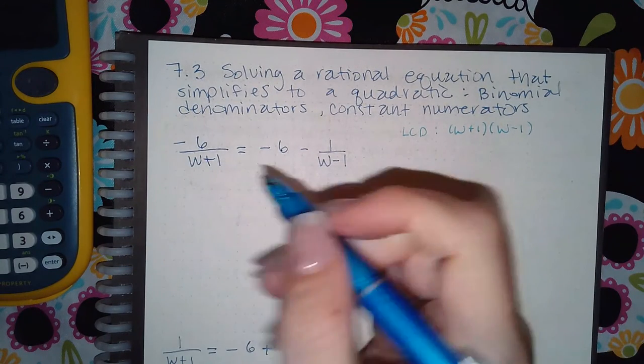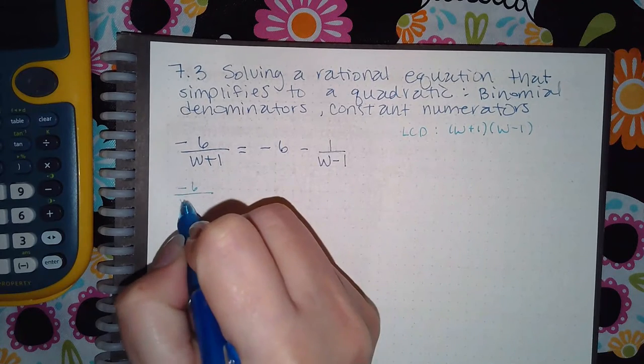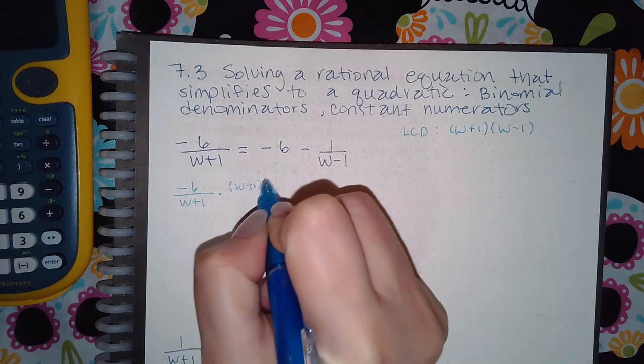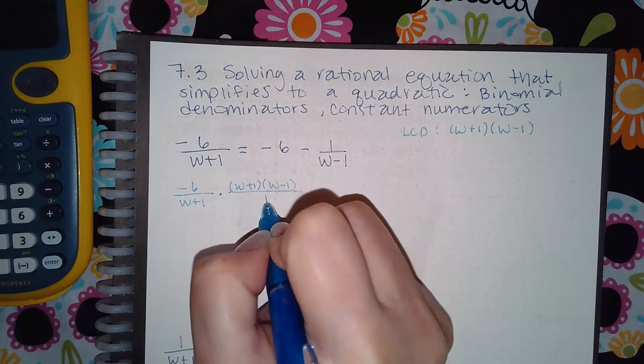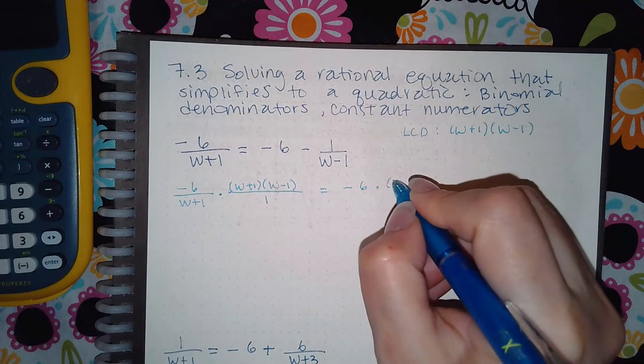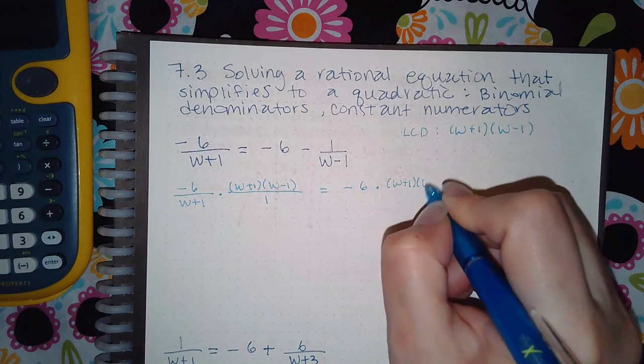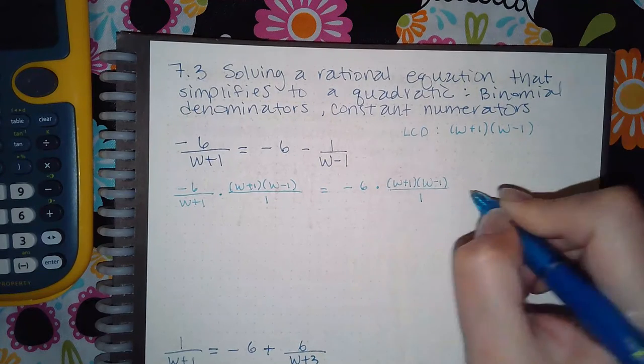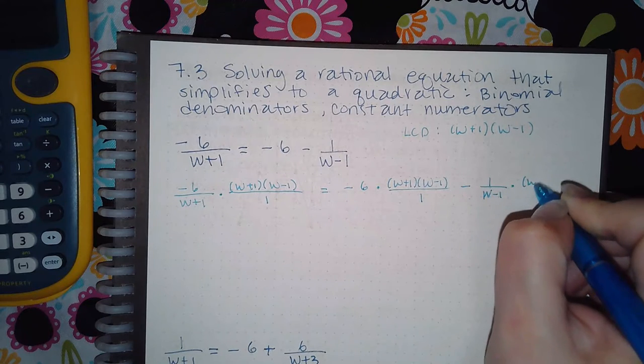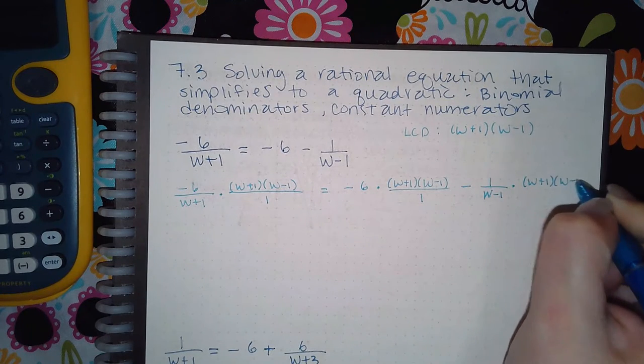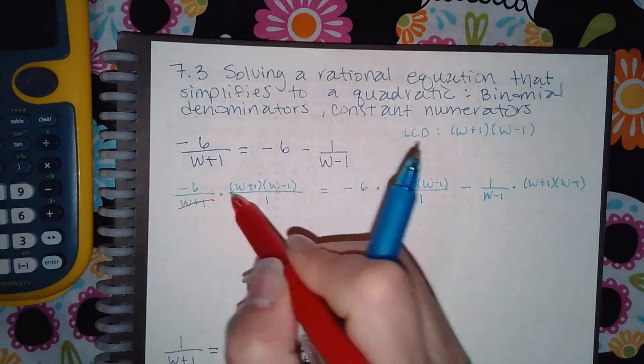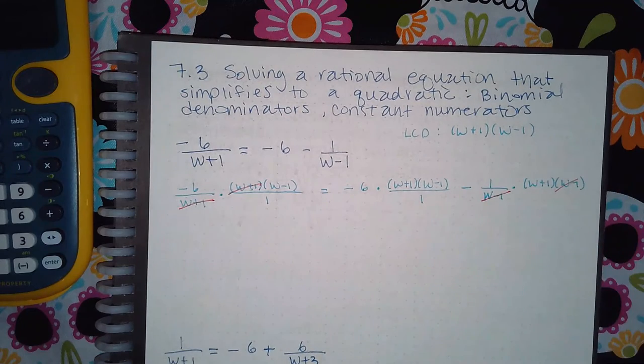Now we're going to take the first fraction and multiply it by w plus 1 times w minus 1. You could think of it as over 1 if it helps you visually. Equals negative 6 times w plus 1 times w minus 1 minus 1 over w minus 1 times w plus 1 and w minus 1. And so then we cancel what we can or reduce, so we can reduce those factors.